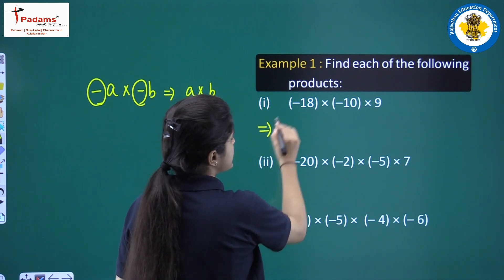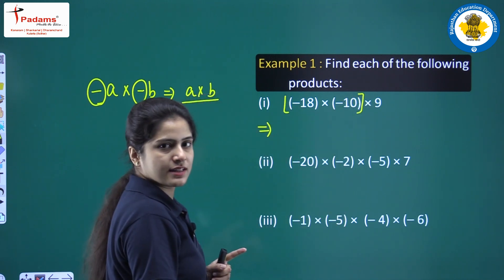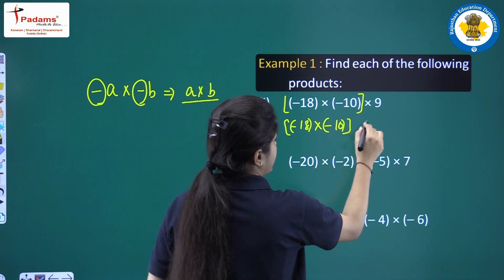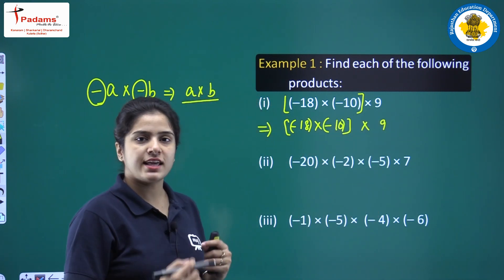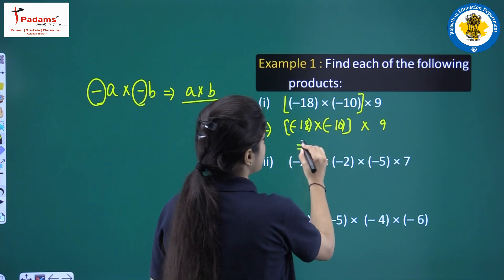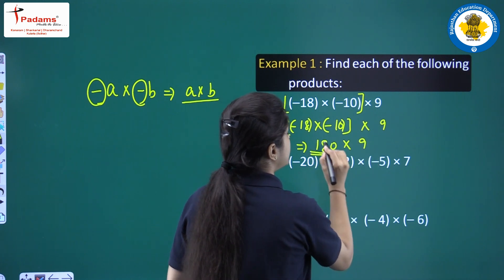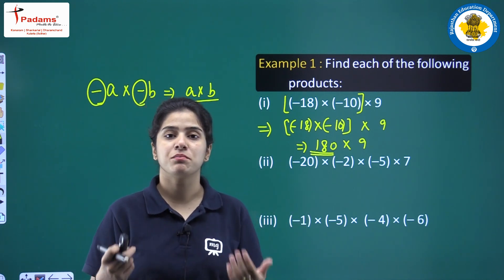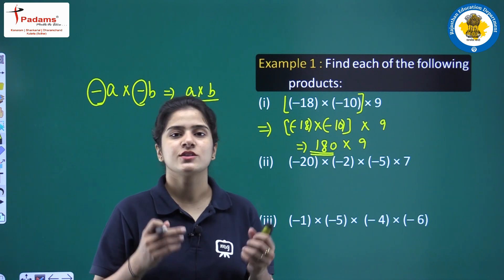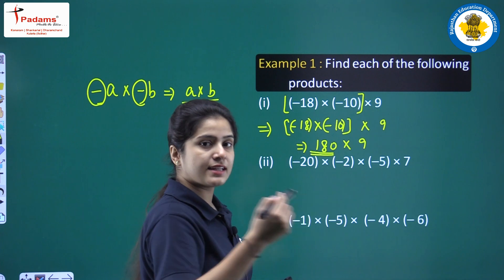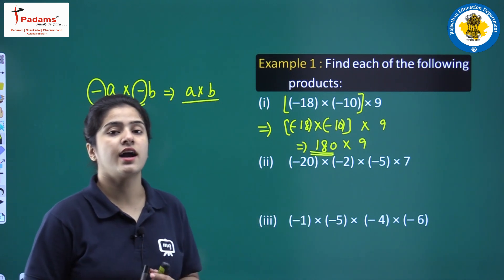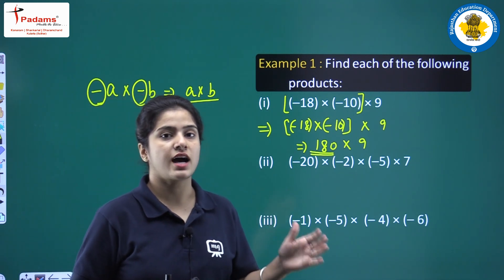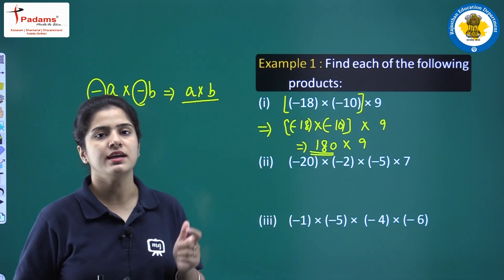In this particular case we put brackets: minus 18 multiplied by minus 10, into 9. 18 multiplied by 10 equals 180. We multiply by 9 and we are not putting any negative sign because minus a into minus b equals plus a into b. We have also covered that if the negative integers appear an even number of times the product will be a positive integer, and if an odd number of times the product will be a negative integer.